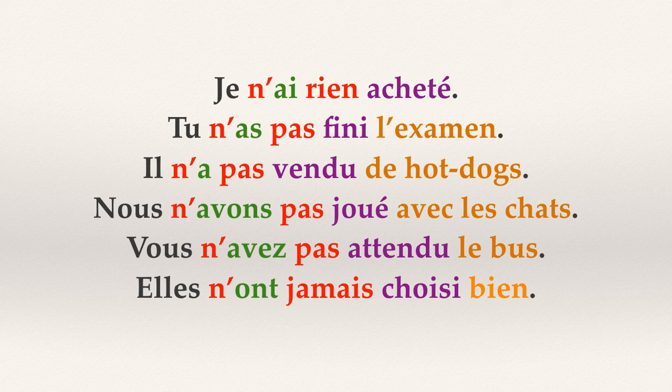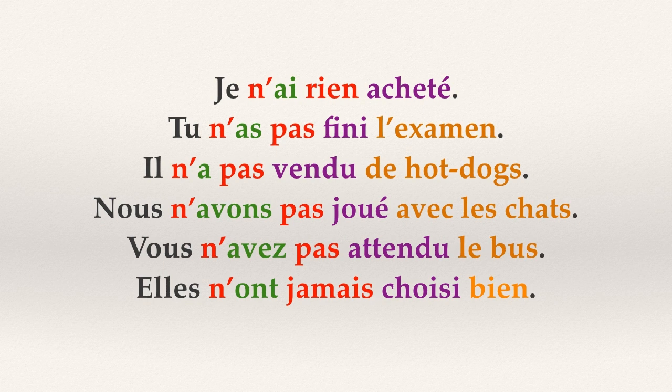Here are some examples using all of our subjects: Je n'ai rien acheté — I bought nothing. Tu n'as pas fini l'examen — You didn't finish the test. Il n'a pas vendu de hot dog — He didn't sell hot dogs. Nous n'avons pas joué avec les chattes — We don't play with cats. Vous n'avez pas attendu le bus — You didn't wait for the bus. Ils n'ont jamais choisi bien — They never choose well.